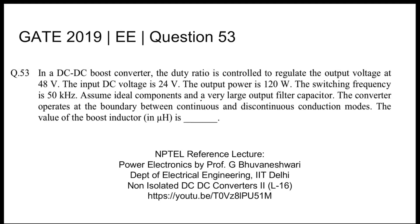The output power is 120 watts. The switching frequency is given to be 50 kilohertz. Assume ideal components and very large output filter capacitor, so the voltage ripple is minimal. The converter operates at the boundary between continuous and discontinuous conduction mode. So the value of the boost inductor is... Now in order to solve this question...